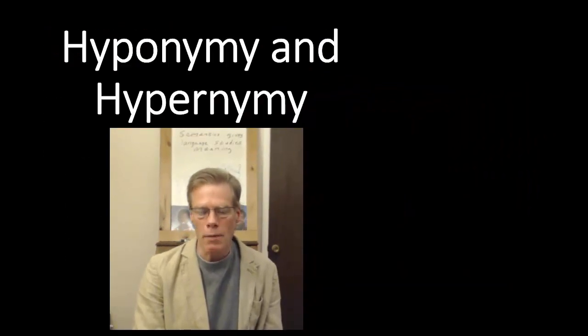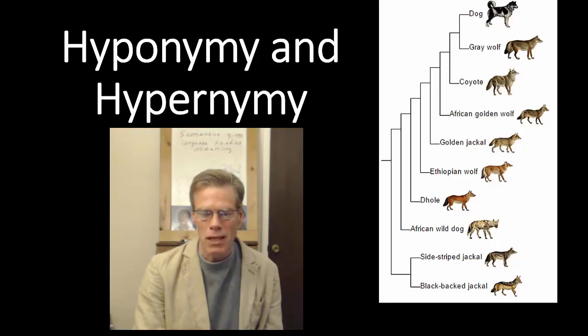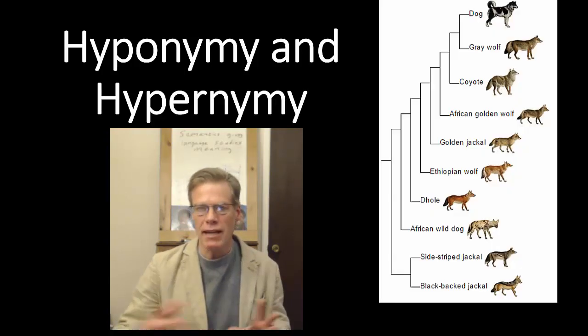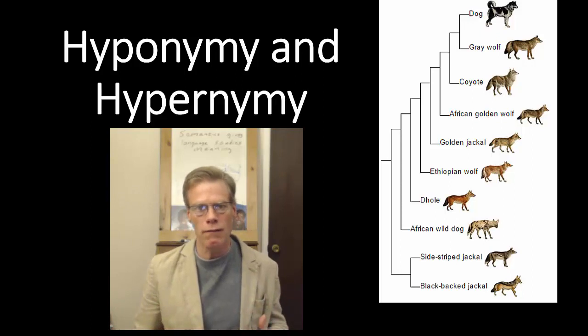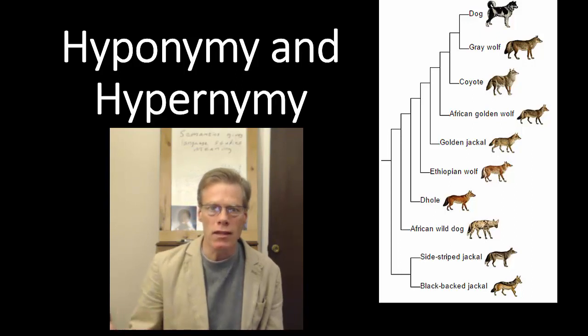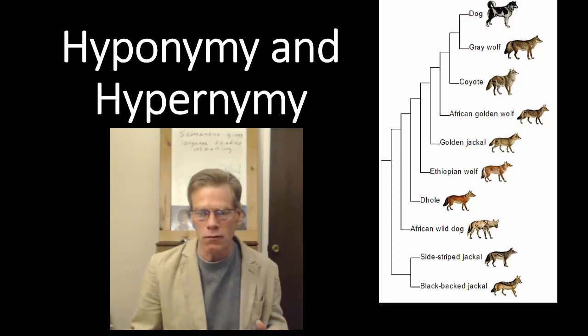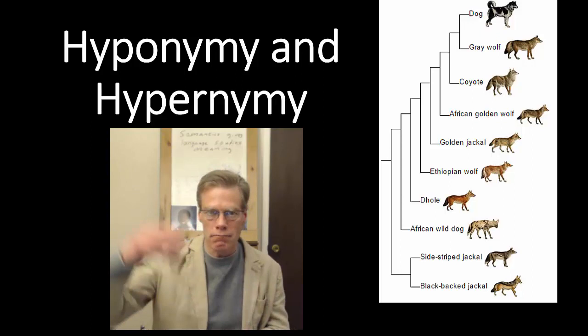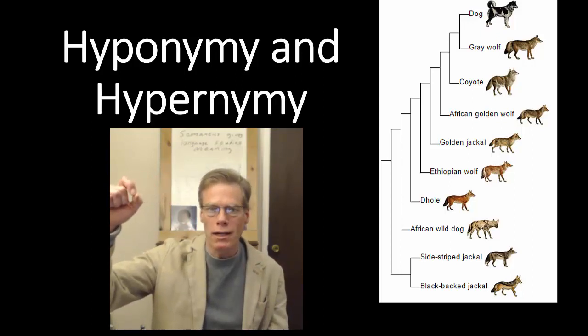Let's start with hyponymy and hypernymy. This is the idea of sets and subsets. This ends up being a very useful way of defining terms. So, for example, when we talk about animals, we often think about them in terms of their relationships to other animals. So, we group canines together, for example.